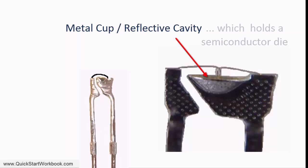A metal cup is placed on the negative pin, which holds a semiconductor die. This is a combination of two semiconductor materials: an N-type, which is a negative type of material, and a P-type, which is positive, as well as an active region in between the P and the N types, which is called the P-N junction.